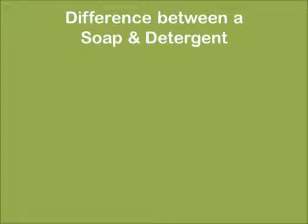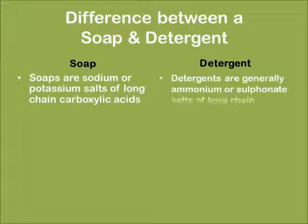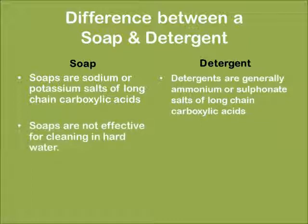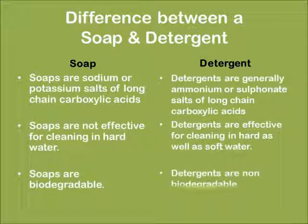Now let us see the differences between soap and detergent. Soaps are sodium and potassium salts of long chain carboxylic acids, whereas detergents are generally ammonium or sulfonate salts of long chain carboxylic acids. Soaps are not effective for cleaning in hard water, but detergents are effective in both hard and soft water. Additionally, soaps are biodegradable, but detergents are not biodegradable.